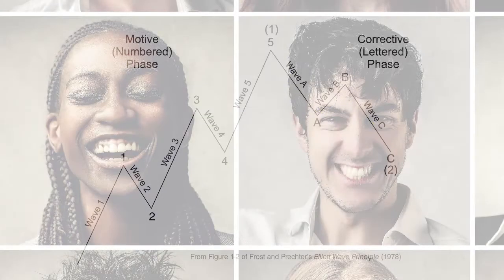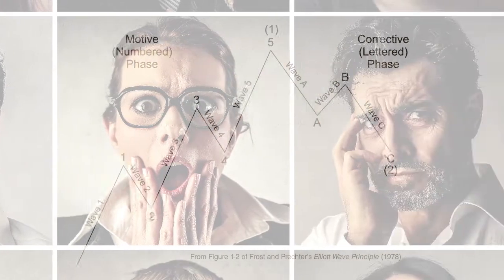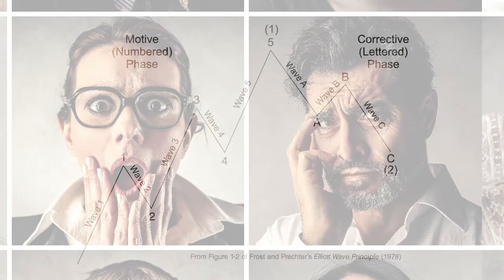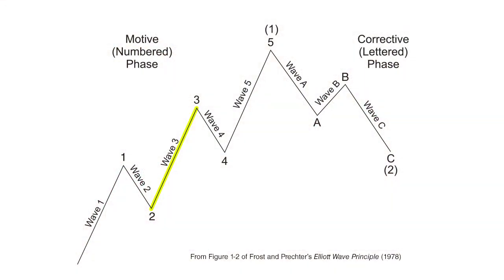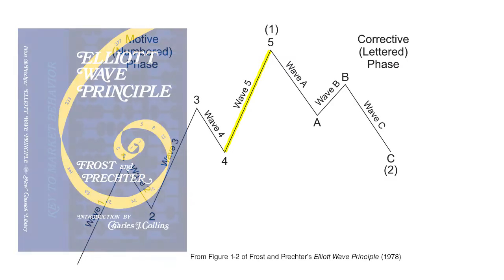First, realize that each wave in price reflects the dominant investor mood. For example, strong price advances on high volume typically happen during wave three, the healthiest leg of a bull market. With that in mind, here's a partial description of a fifth wave from the Wall Street classic book, Elliott Wave Principle: Key to Market Behavior, by Frost and Prechter.